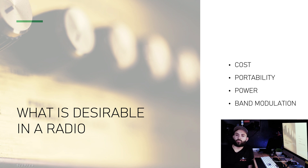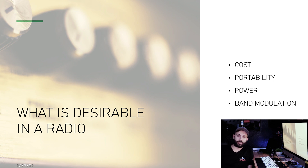You can actually use a CB radio to access certain portions of the HF bands. With the right antenna and the right setup on an old CB radio you have laying around, you could potentially be on digital modes and utilize it in that manner.